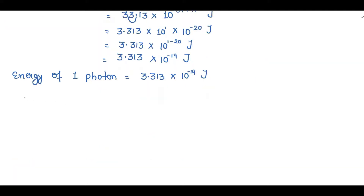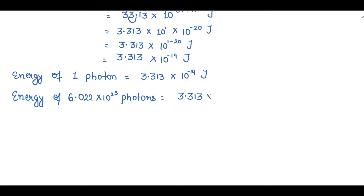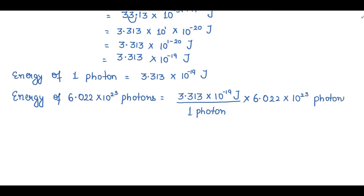Energy of Avogadro's number of photons — that means 1 mole of photons, 6.022 × 10²³ photons — equals the right-side value taken in the numerator: 3.313 × 10⁻¹⁹ joule, divided by the first left-side value (1 photon), multiplied by the second left-side value 6.022 × 10²³ photons. The 'photons' cancel out.